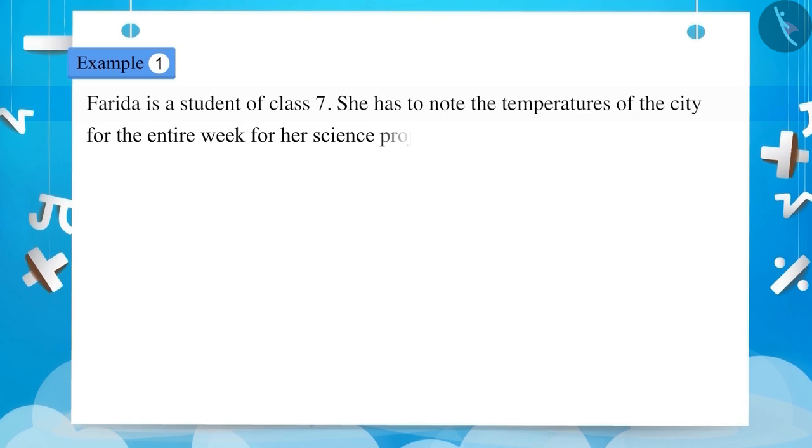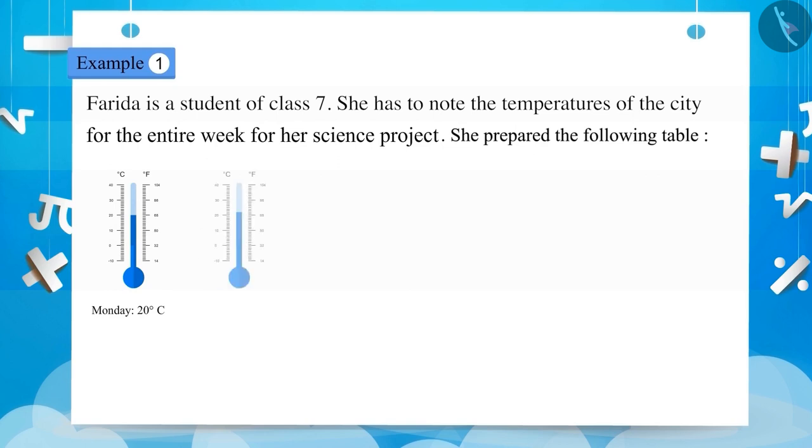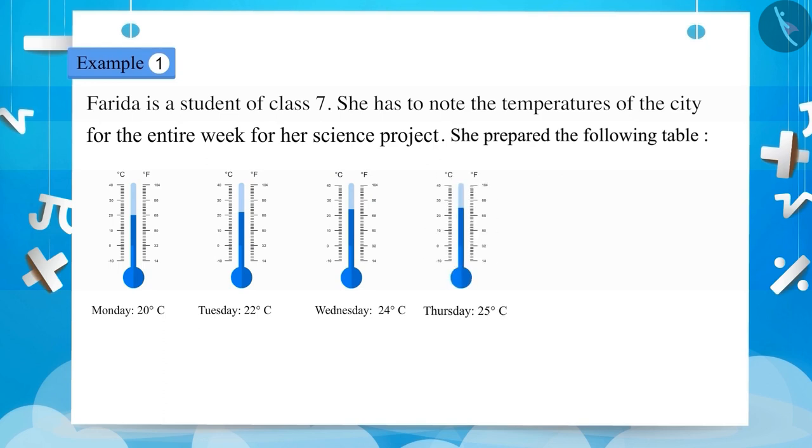She prepared the following table. Monday, 20 degrees Celsius. Tuesday, 22 degrees Celsius. Wednesday, 24 degrees Celsius. Thursday, 25 degrees Celsius. Friday, 23 degrees Celsius. Saturday, 20 degrees Celsius. Can you guess the temperature she would have noted on Sunday?